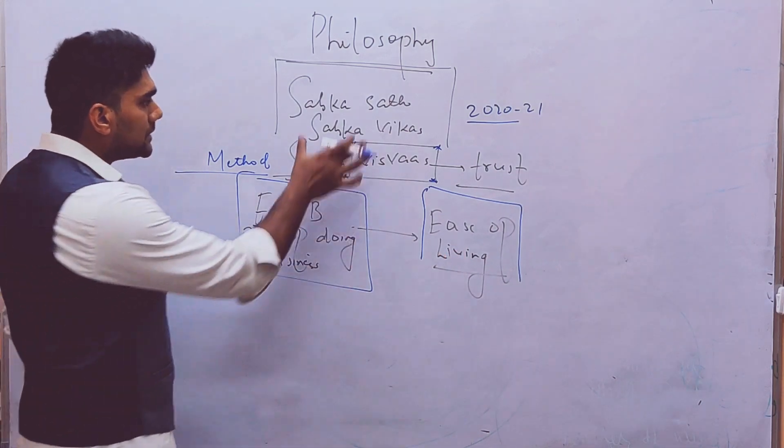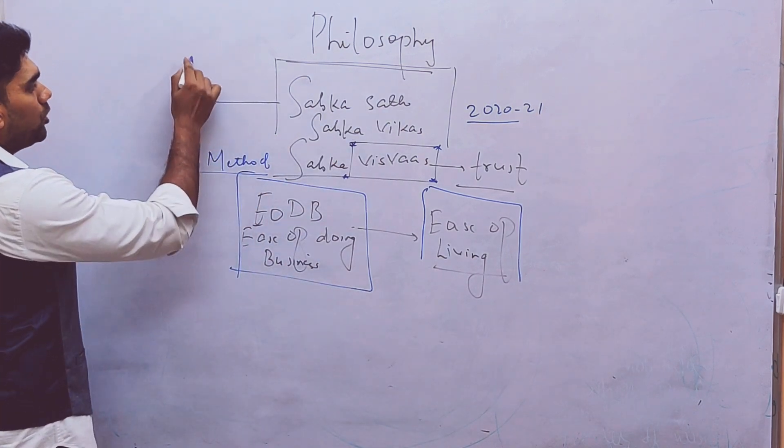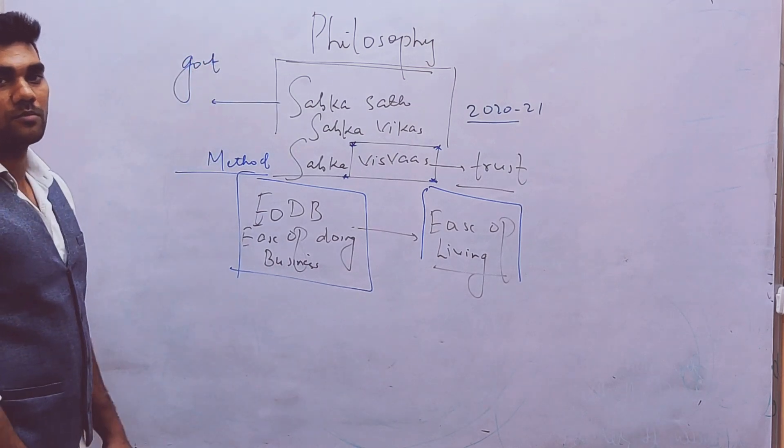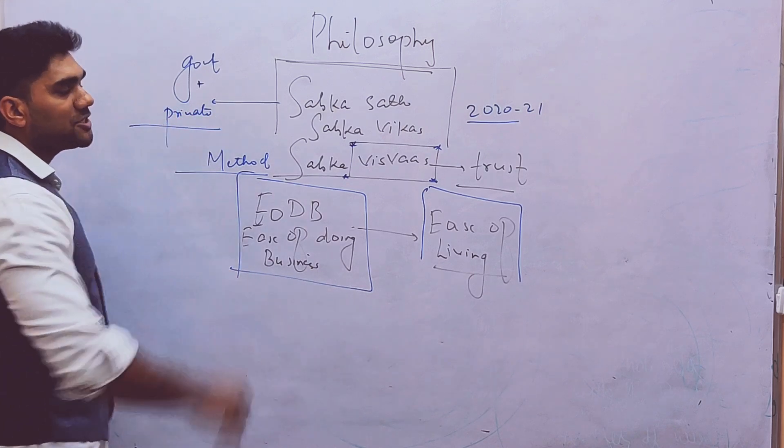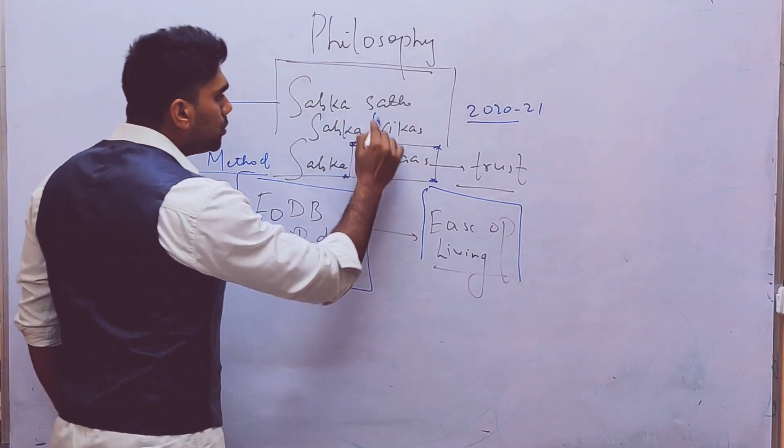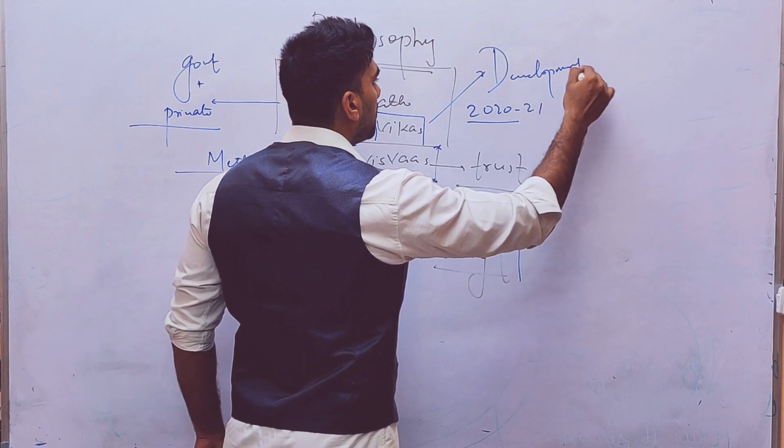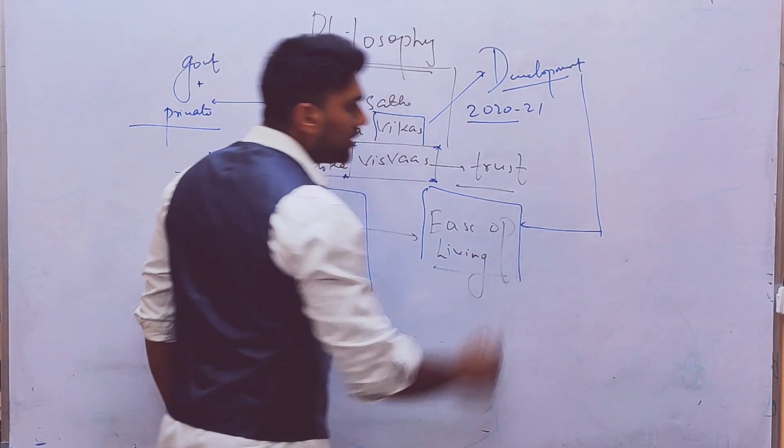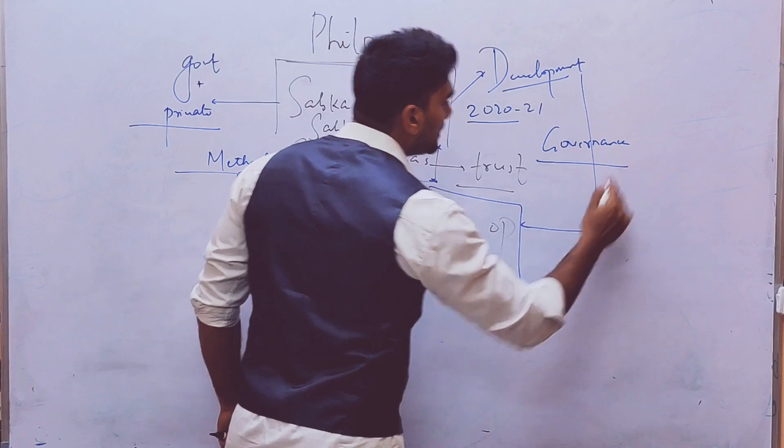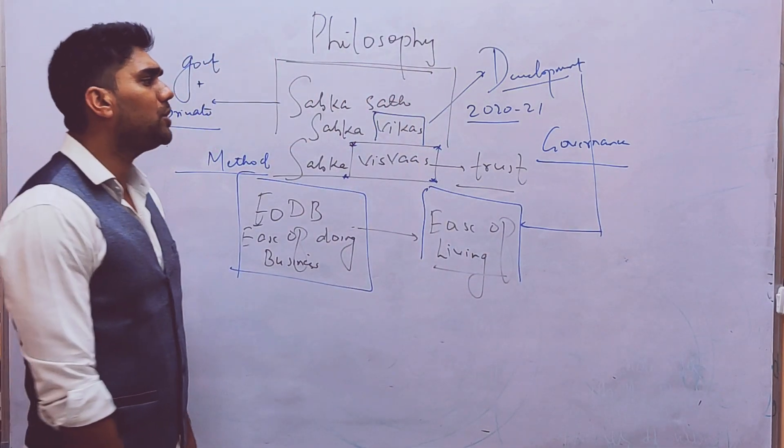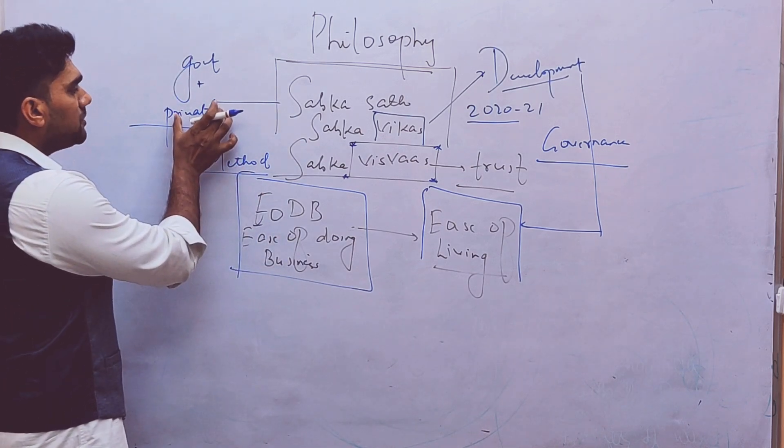And this ease of living of the country will be decided in certain parameters. So if I want to do the development, Vikas is called development, the government also needs someone else - the private sector. Which can be linked with ease of living, which can be linked with governance. What is the objective of governance? Development.